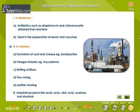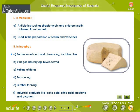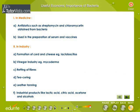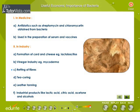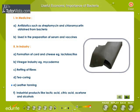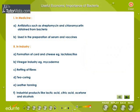In industry, Lactobacillus helps in the formation of curd and cheese. Mycoderma is used in the manufacture of vinegar. Certain bacteria are useful in retting of fibre, curing of tea leaves, and tanning of leather. Bacteria are also used in the preparation of industrial products such as lactic acid, citric acid, acetone, and alcohols.